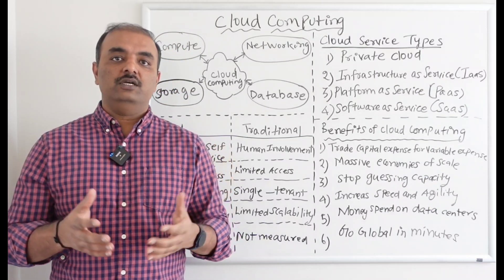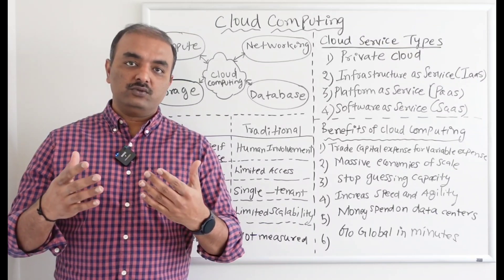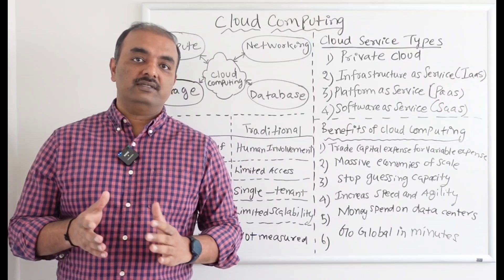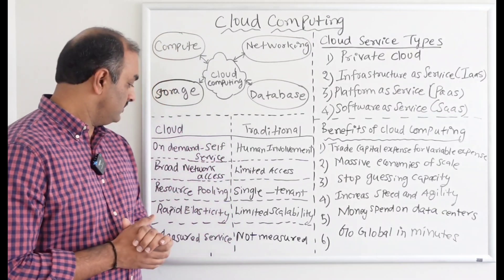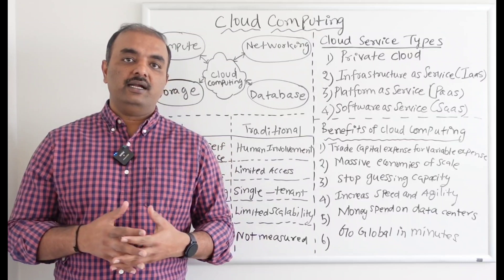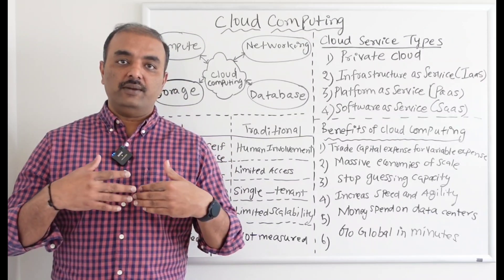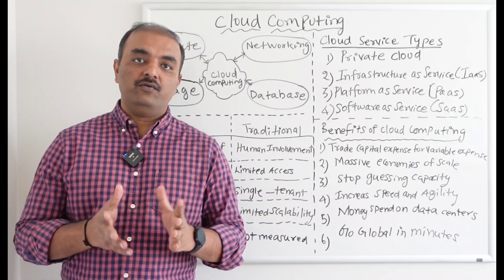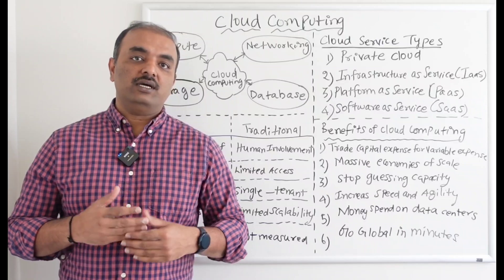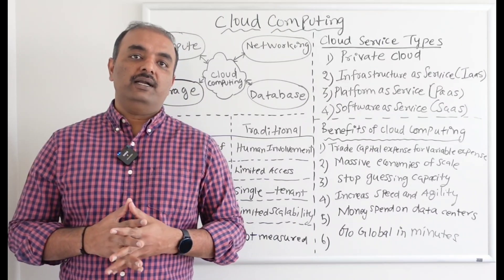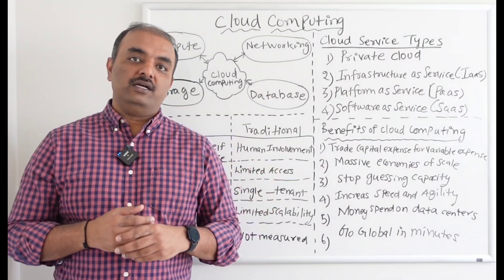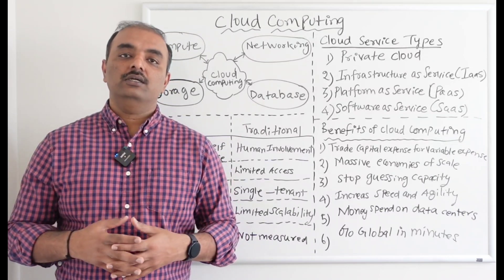Now let's see the difference between traditional computing, which is on-premises, versus cloud computing. The first positive difference is on-demand self-service. In cloud, you as an admin can deploy servers and everything can be done by clients without human involvement. Whereas on-premises, every time you want to add a server, an admin has to do it manually. In cloud computing it's more console-based — you log into AWS or Google Cloud and do it yourself.